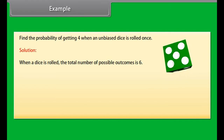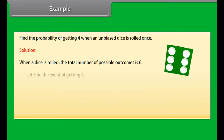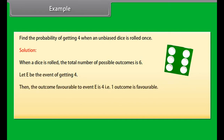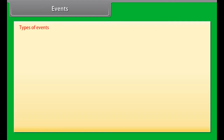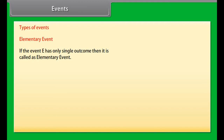Example: Find the probability of getting 4 when an unbiased dice is rolled once. Solution: When a dice is rolled, the total number of possible outcomes is 6. Let E be the event of getting 4. Then, the outcome favorable to event E is 4. That is, one outcome is favorable. Hence, probability of event E is equal to 1 upon 6.